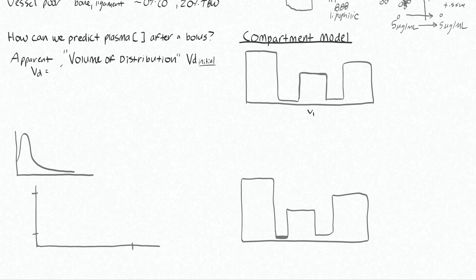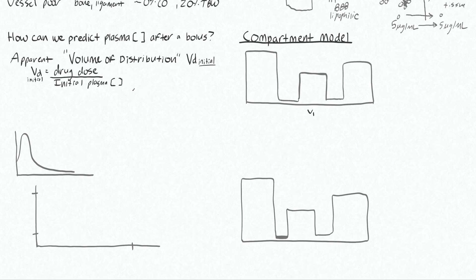The volume of distribution equals the drug dose divided by the initial plasma concentration — that is Vd initial. What this volume of distribution tells you is what volume it looks like your drug has gone into. Your plasma volume is about five liters, so if every drug distributed itself only in the plasma and went nowhere else, the volume of distribution for every drug would be five liters, but that's not the case.